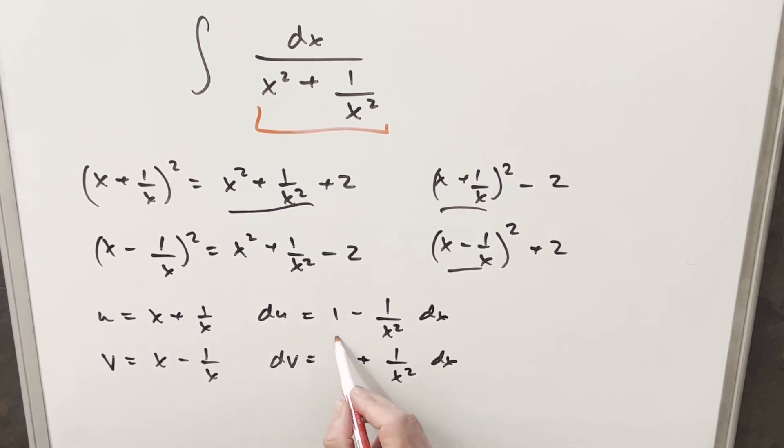And so what I want to use is we have these two different derivative values. But notice if I take these together and add them together, these terms cancel out. We can just end up with 2.